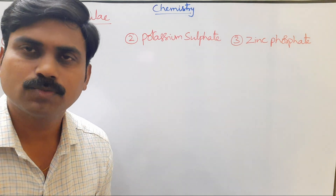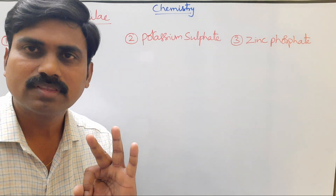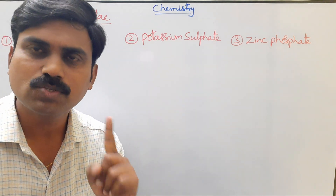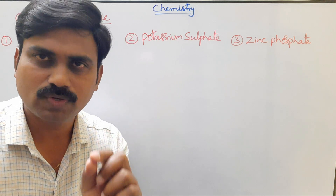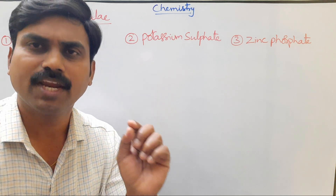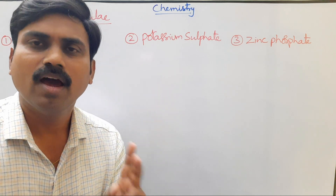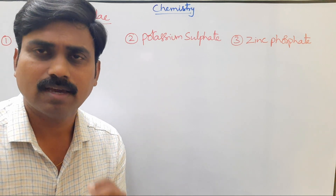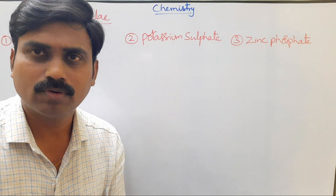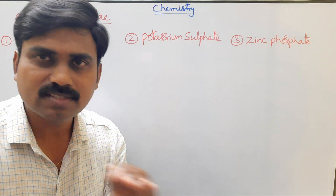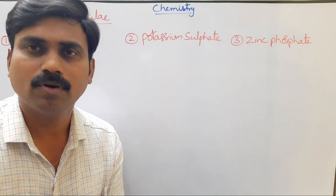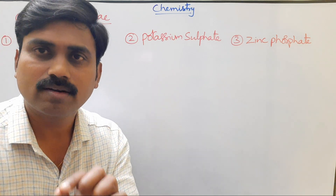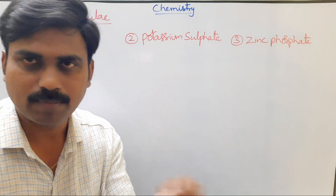To write chemical formulas, we follow three rules. First, write the positively charged ion and the negatively charged ion. Second, criss-cross the charge values. Third, write the simplified formula.